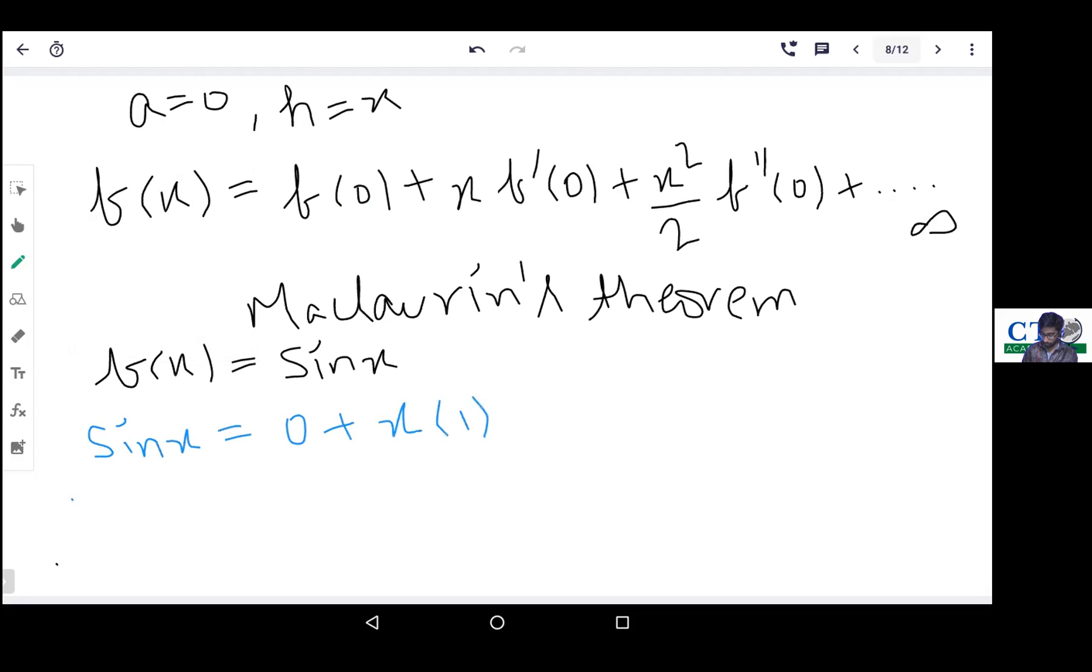And then x squared upon 2 factorial times f double dash (0). The differentiation of cos(x) is minus sin(x), so minus sin(0) will be 0.